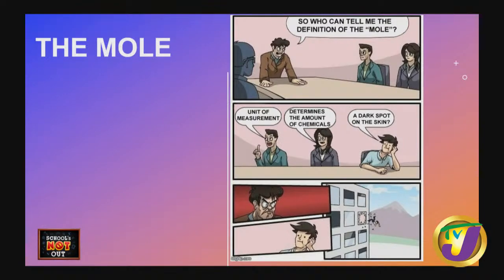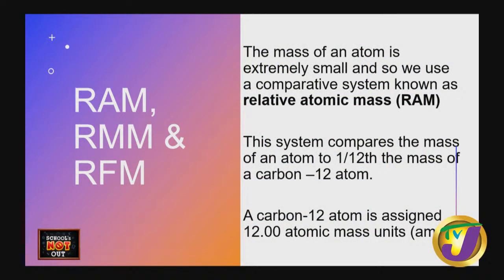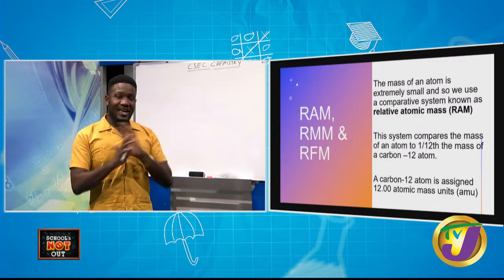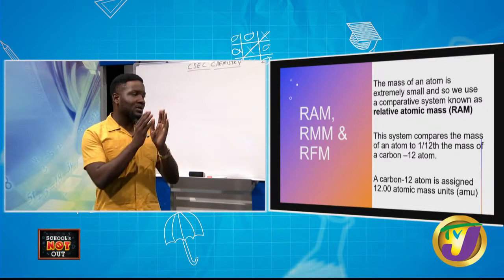So the first thing we need to look at is the mass of an atom. We're going to define RAM, RMM, and RFM. The mass of an atom is extremely small, and so we cannot use conventional units of measurement to assign to atoms. We use a unit of relative atomic mass — a system that compares any atom in the periodic table, whether it's calcium, phosphorus, or potassium, to carbon-12.